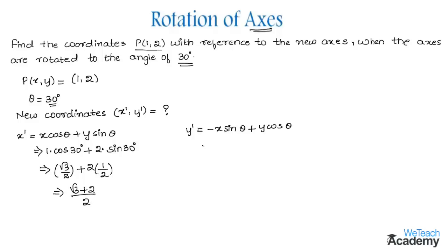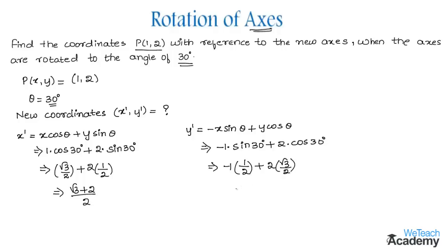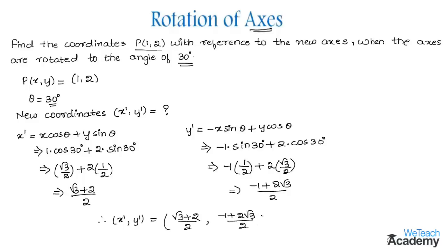For y-dash: minus 1 times sin 30 plus 2 times cos 30, which gives minus 1 times 1/2 plus 2 times root 3 over 2, giving (minus 1 + 2 root 3) / 2. Therefore, x-dash comma y-dash equals (root 3 + 2) / 2 comma (minus 1 + 2 root 3) / 2. These are the coordinates with reference to the new axis.